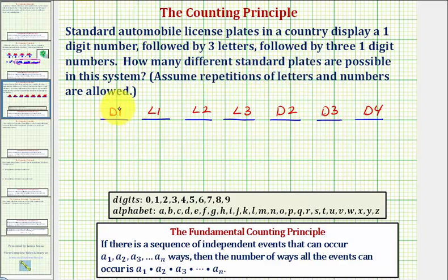So for the one-digit numbers, there are ten digits from zero through nine, and therefore there are ten possible outcomes, or ten ways this first event can occur. So we'd have ten times the next event where we're selecting a letter from the alphabet. There are twenty-six letters in the alphabet, so there are twenty-six ways this event can occur.